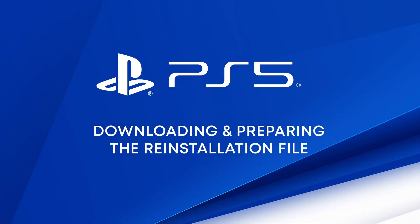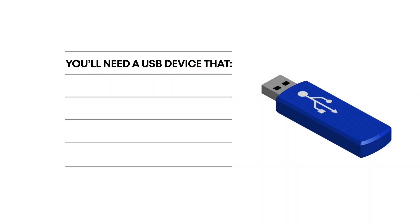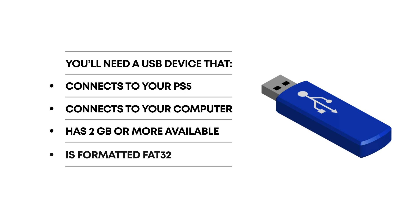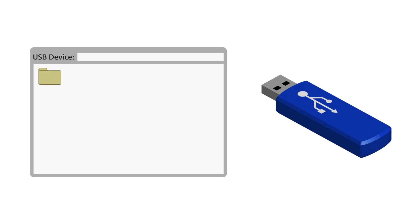Here's how to download and prepare the reinstallation version of system software. You'll need a USB device that can be connected to your PS5 console and your computer, and that has at least two gigabytes of space available. The USB device must be in a FAT32 format. Create a folder named PS5 at the root level of your USB device. Create a second folder inside the PS5 folder and name it Update. Both folder names must be in all capital letters.